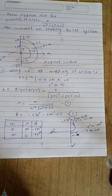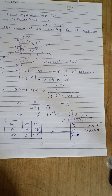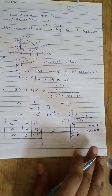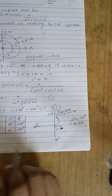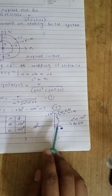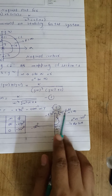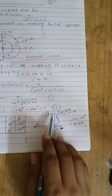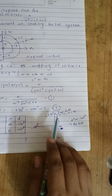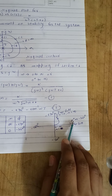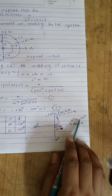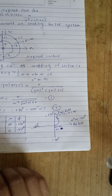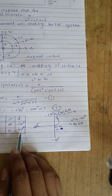Now let us see how we can map section C1 from the s-plane to the GH-plane. In the GH-plane, the horizontal axis defines Real(GH) and the vertical axis defines Imaginary(GH). The phase angle varies from minus 270 degrees to minus 360 degrees as omega varies from zero to infinity.